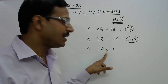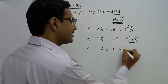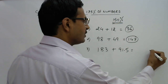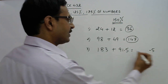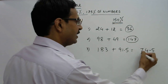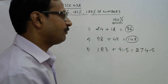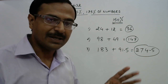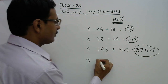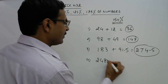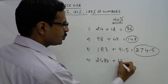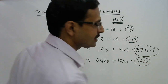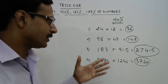Likewise, for a larger number like 183: half of 180 is 90, and half of 3 is 1.5, so half of 183 is 91.5. Adding 183 and 91.5 gives 274.5, which is 150% of 183. For 2418, half is 1209 — adding gives 3627. You can solve this in no more than three seconds.